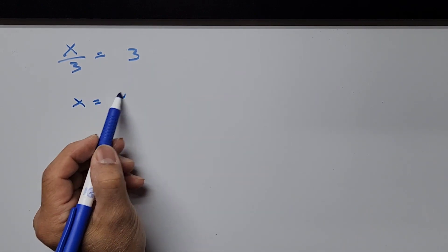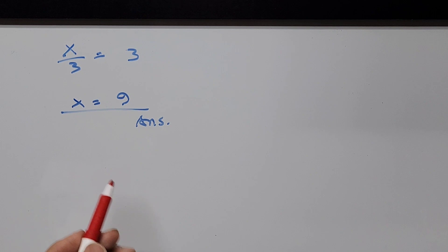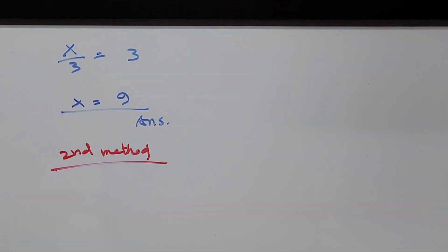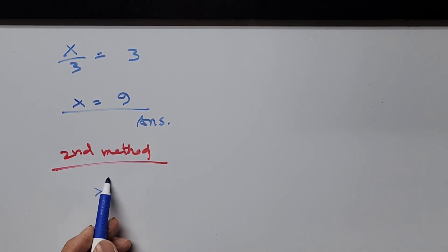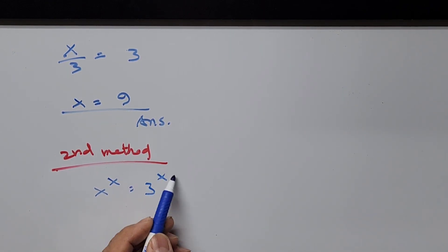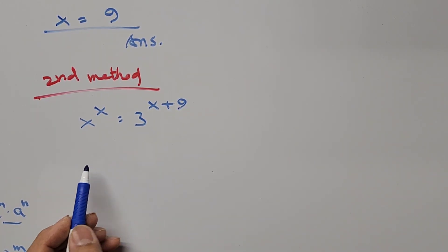Now let's go to the second method. In this second method we'll be using the laws of common logarithm. We have the original equation: x to the power of x equals 3 to the power of x plus 9. We take the common logarithm of both sides of the equation.